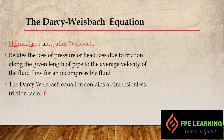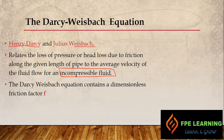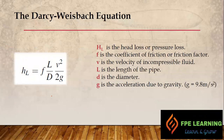This equation comes from two scientists, Henry Darcy and Julius Weisbach, which is why it's called the Darcy-Weisbach equation. This equation relates the loss of pressure or head loss due to friction in a pipe to the average velocity of fluid flow for an incompressible fluid. The Darcy-Weisbach equation contains a dimensionless frictional factor called F. The formula is: head loss equals F times L times V squared, divided by diameter times 2G.